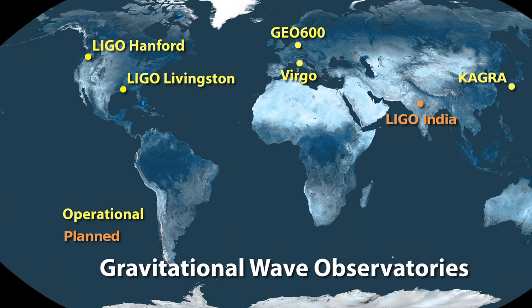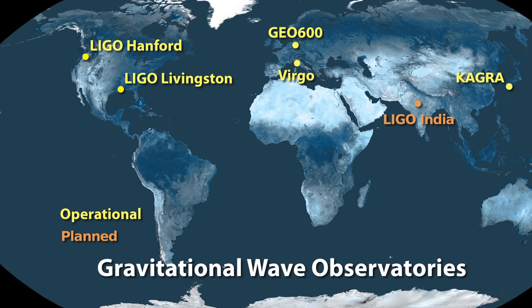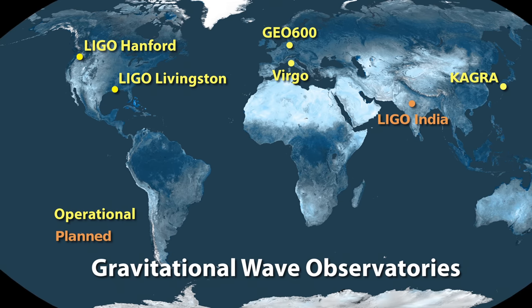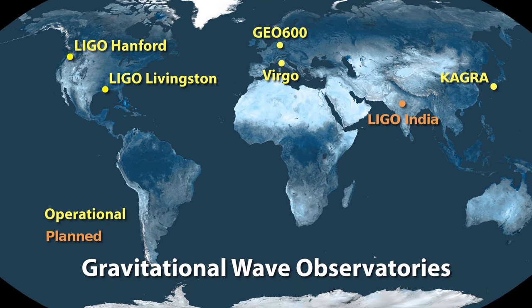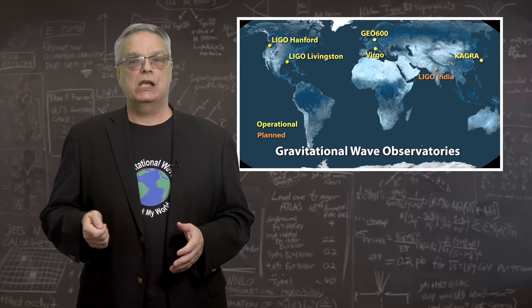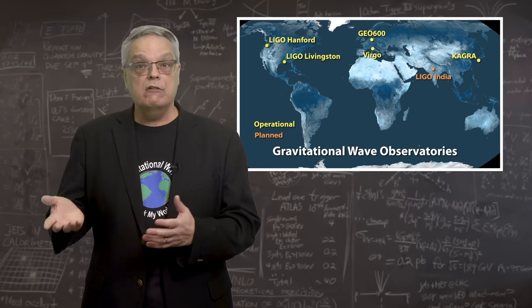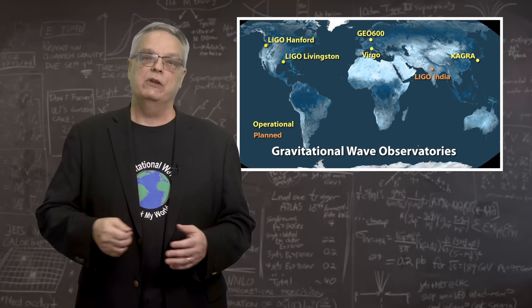I should say that there are actually two LIGO facilities in the US, one in Louisiana and one in Washington state, as well as similar facilities in Europe and Japan. The multiple sites make it possible for scientists to determine where in the sky gravitational waves are coming from.